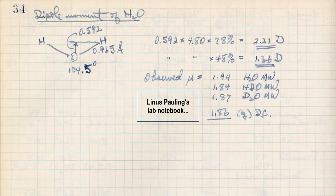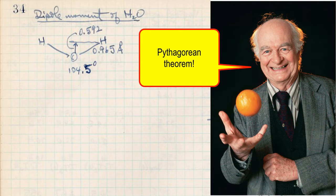Here's a couple of interesting pages from his lab notebook I want to show you. Look at this one — see that triangle up there? Two H's and an O. He's trying to figure out the geometry using the Pythagorean theorem for the water molecule: 104.5 degrees.